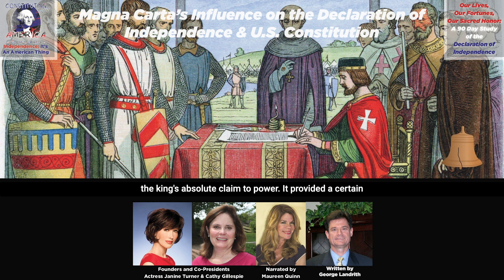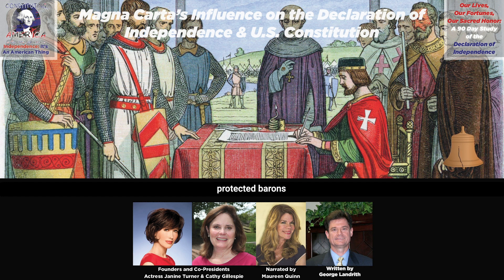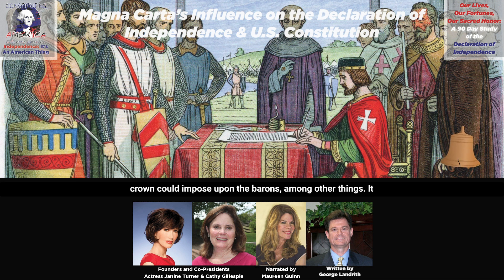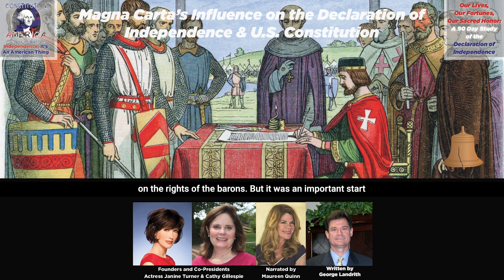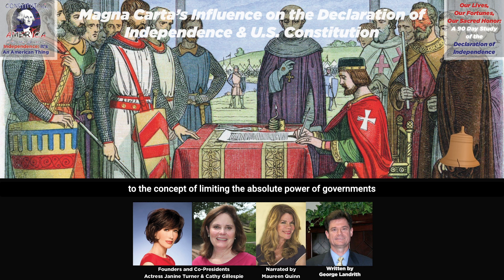The Magna Carta limited the king's absolute claim to power. It provided a certain level of religious freedom or independence from the crown, protected barons from illegal imprisonment, and limited the taxes that the crown could impose upon the barons, among other things. It did not champion the rights of every Englishman — it only focused on the rights of the barons — but it was an important start to the concept of limiting the absolute power of governments or kings that claimed God had given them the absolute right to rule.